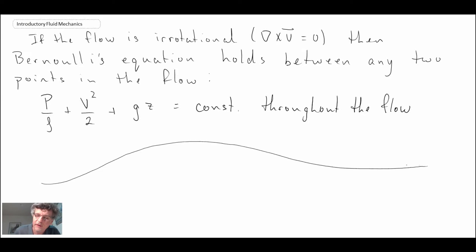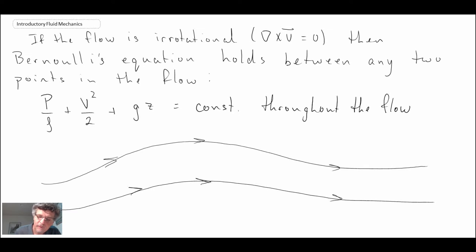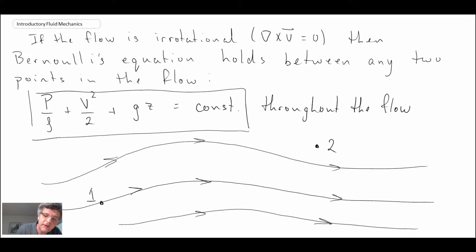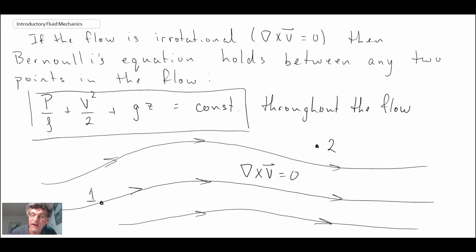If we have a flow field with streamlines, point 1 and point 2 no longer need to be on the same streamline. This form of Bernoulli's holds provided the flow satisfies del cross V equals zero — that is, the irrotationality condition. We'll look at the definition of del cross V in a later lecture.